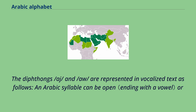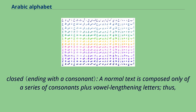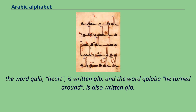The diphthongs 'aj' and 'aw' are represented in vocalized text accordingly. An Arabic syllable can be open or closed. A normal text is composed only of a series of consonants plus vowel-lengthening letters. Thus, the word 'kalb' (heart) is written 'qlb', and the word 'qalaba' (he turned around) is also written 'qlb'.